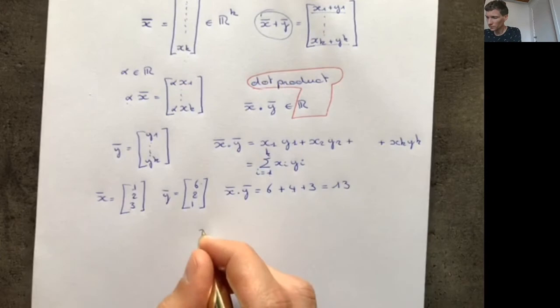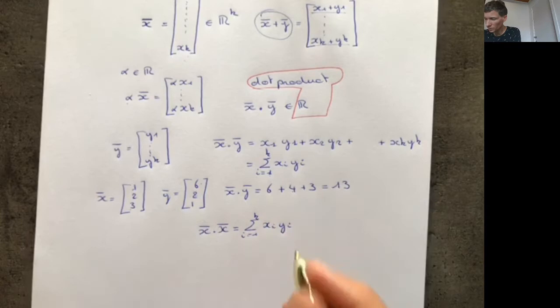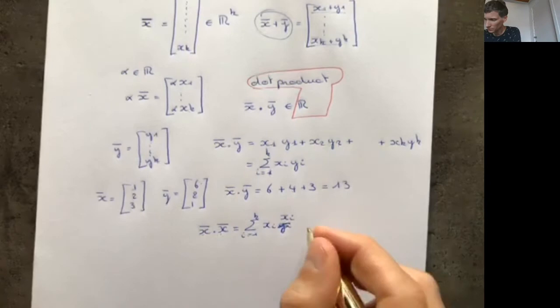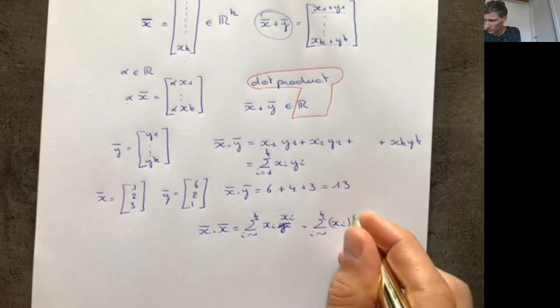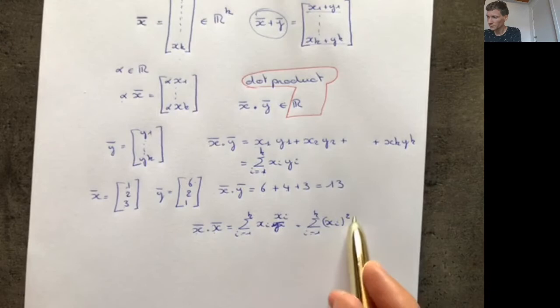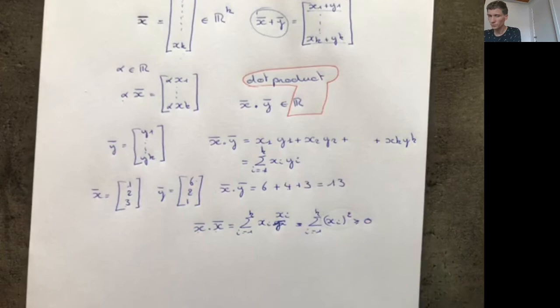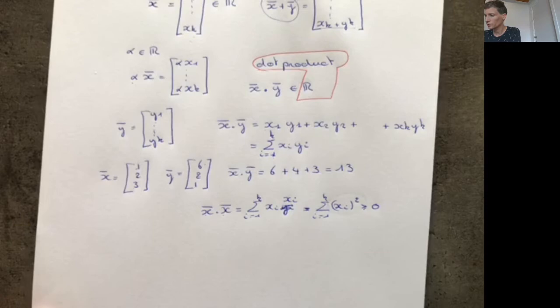For example, if you take the dot product of x with itself, you get the sum from i = 1 to k of xᵢ², which is squaring every element of the vector x and adding them all together. Since a square is always non-negative, you're adding non-negative numbers together, so the resulting number will always be greater or equal to zero.